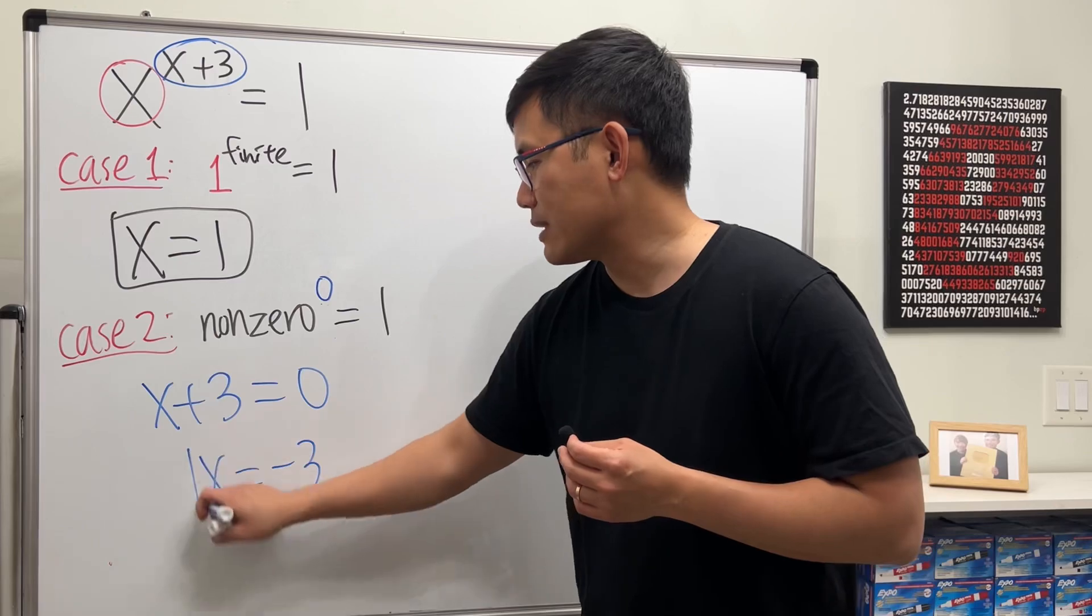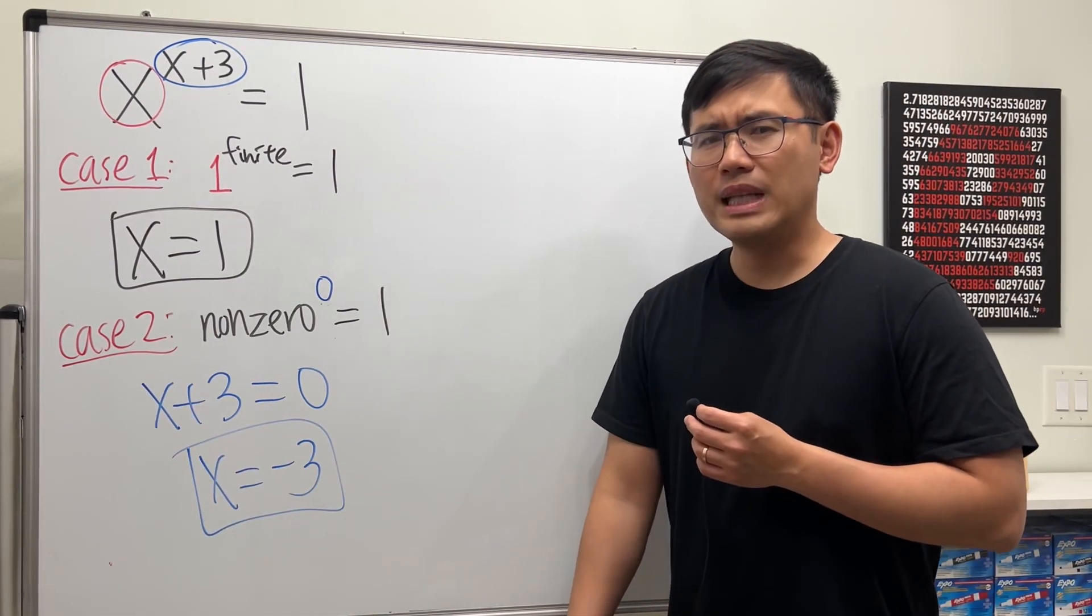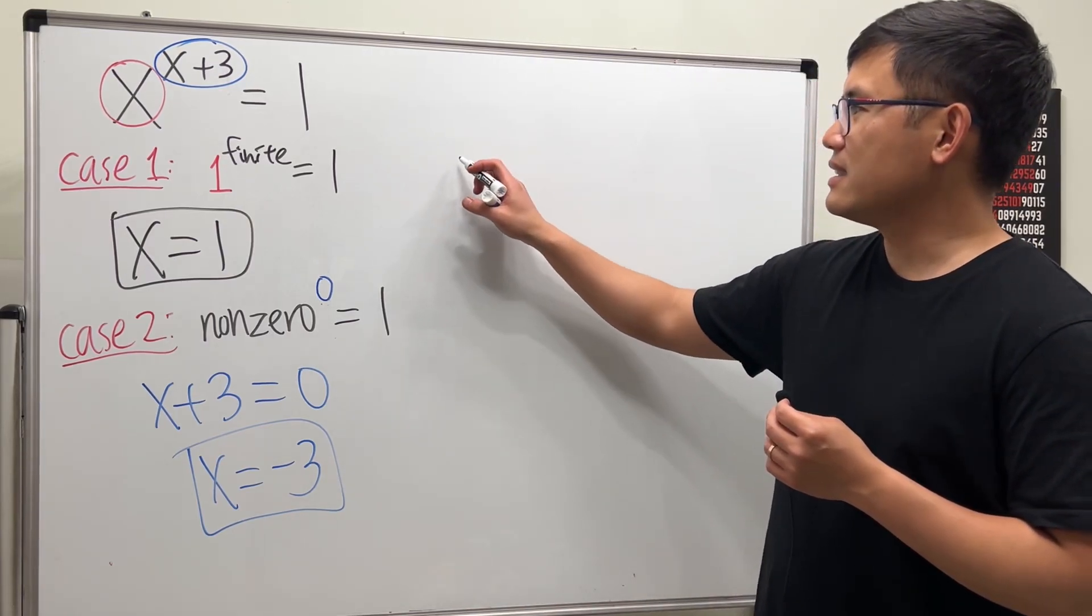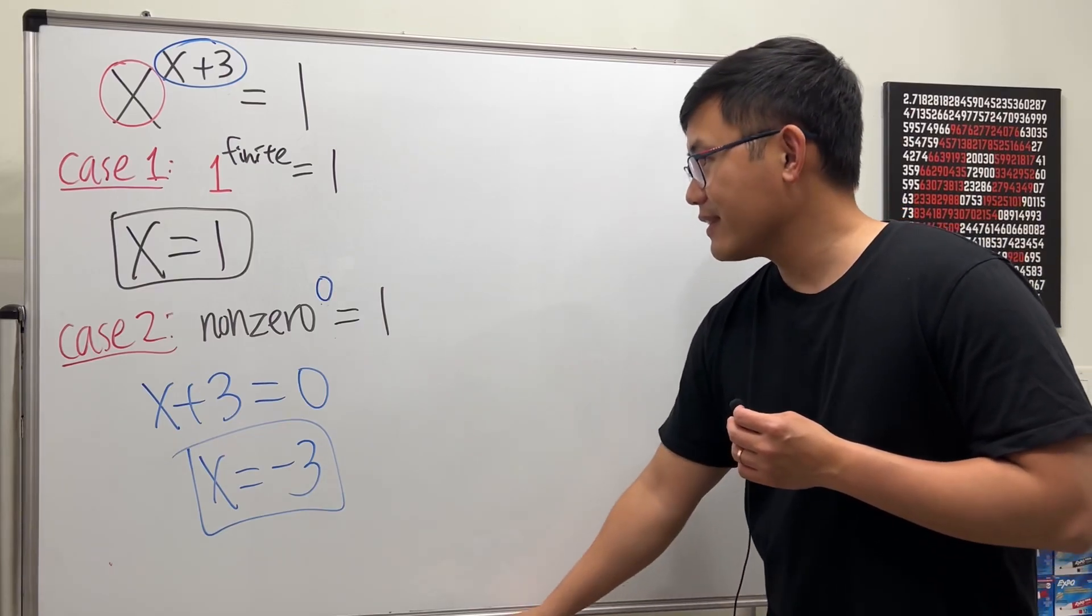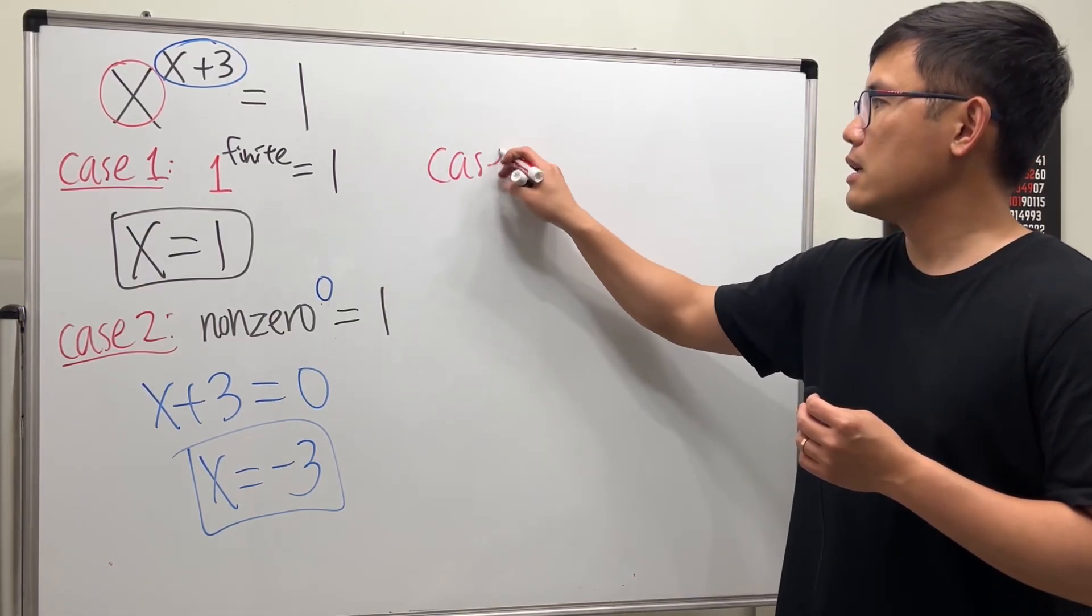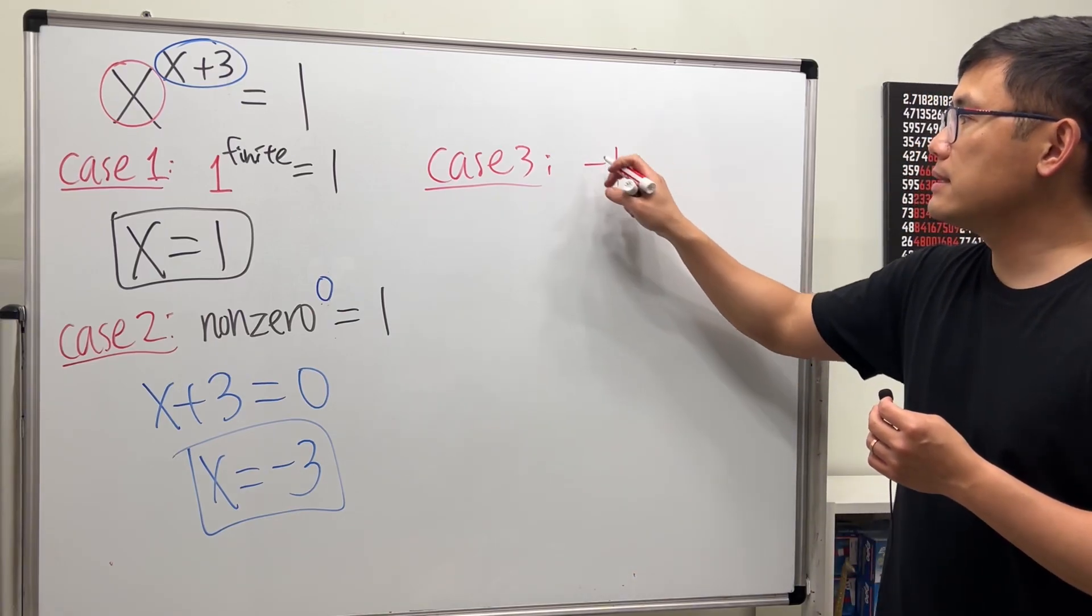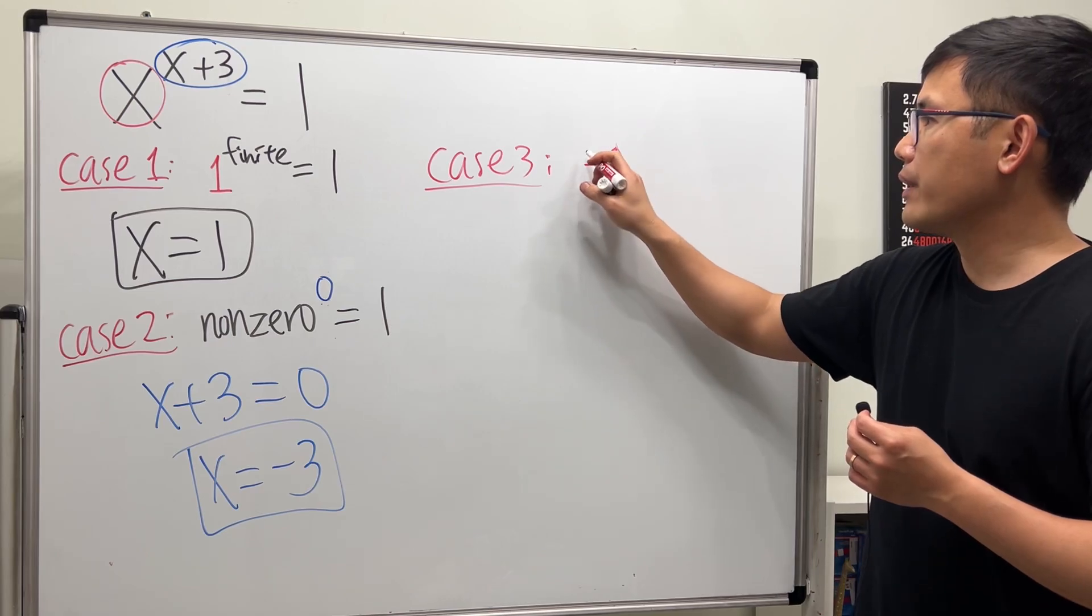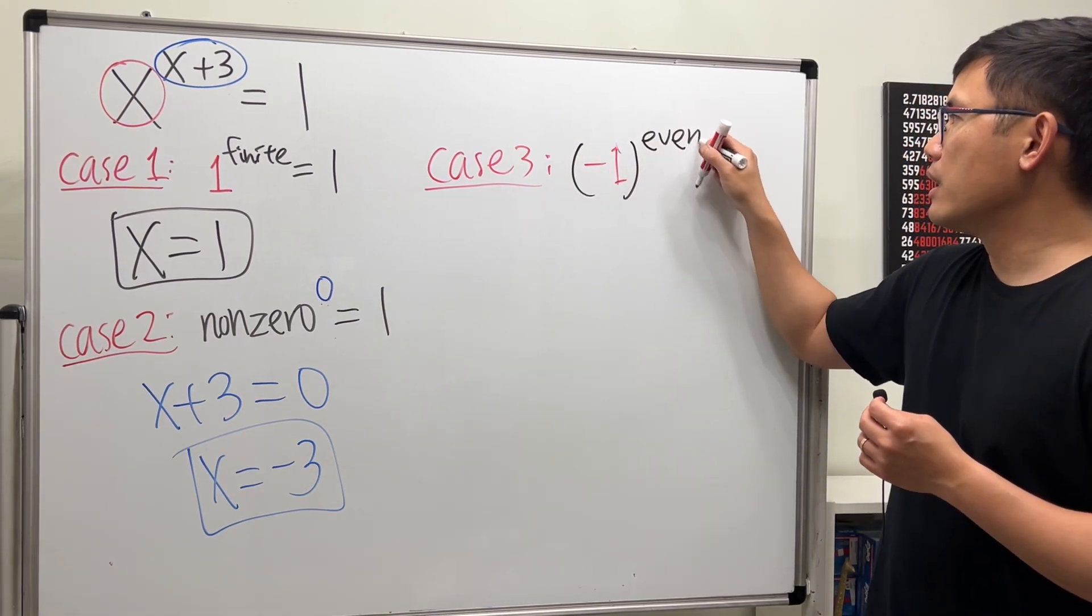Hmm, now is there any other case? Yes, last case is when we have negative one for the base. This is possible though, but you have to be really careful. Negative one raised to an even power will also give us one.